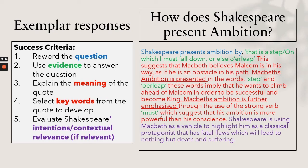Here are four example responses, color-coded to show where the question is reworded, evidence is used, meaning is explained, keywords are selected, and intentions/context are linked. Example question: 'How does Shakespeare present ambition?' Shakespeare presents ambition by: 'That is a step on which I must fall down or else o'erleap.' This suggests Macbeth believes Malcolm is an obstacle in his path. The words 'step' and 'o'erleap' imply he wants to climb ahead of Malcolm to become king. The strong verb 'must' suggests his ambition is more powerful than his conscience. Shakespeare uses Macbeth as a vehicle to highlight him as a classical protagonist with fatal flaws that will lead to nothing but death and suffering.